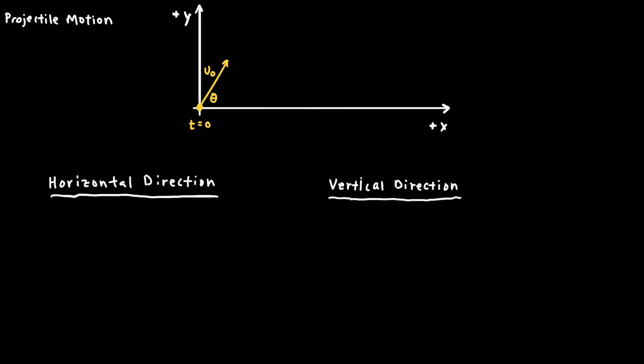In this video we're going to talk about an object that is being launched at an angle above the horizontal and moving in two dimensions. We're going to think about what happens in the horizontal direction and in the vertical direction using the kinematic equations we've already learned in order to study this object's projectile motion. We'll start with an object launched from the origin at an angle theta above the horizontal with an initial velocity v-naught at time t equals zero.